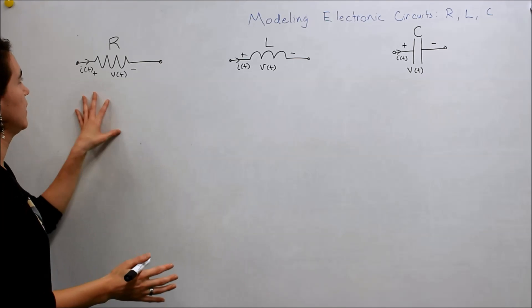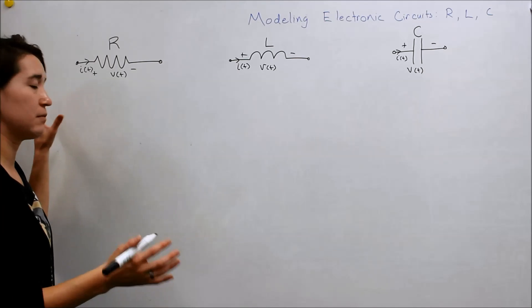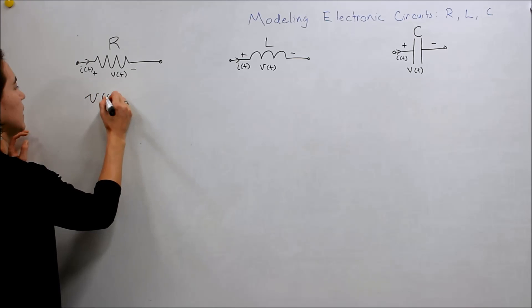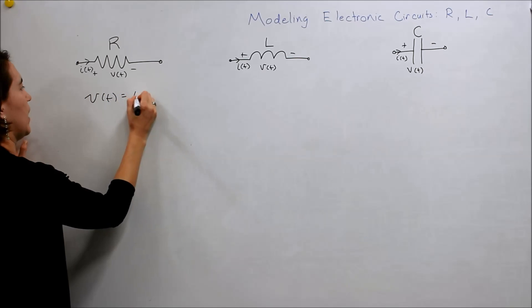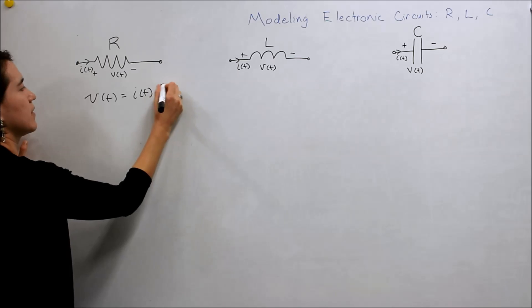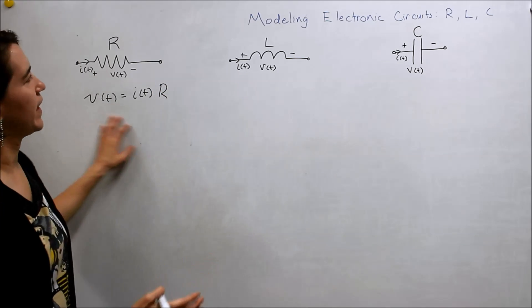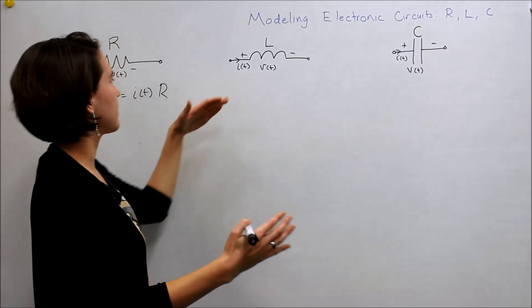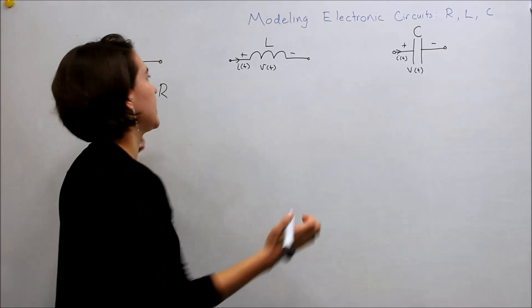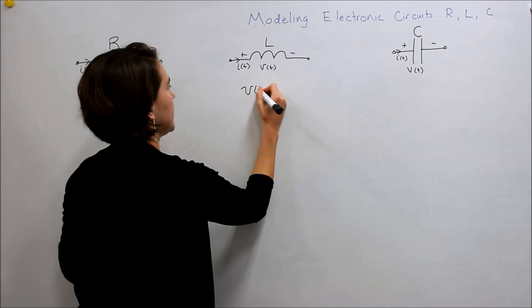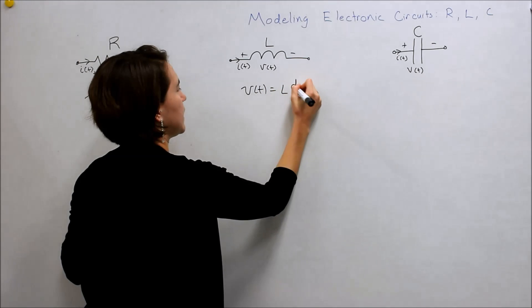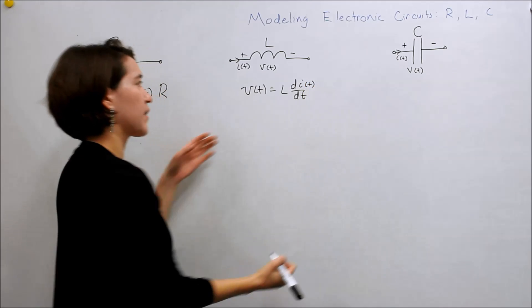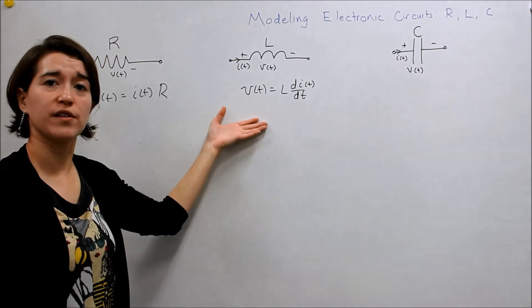Let's write down the equations for this. The resistor's pretty easy — remember Ohm's law? V of T equals I of T times resistance. For the inductor, V equals L·di/dt. And there's our governing equation for an inductor.